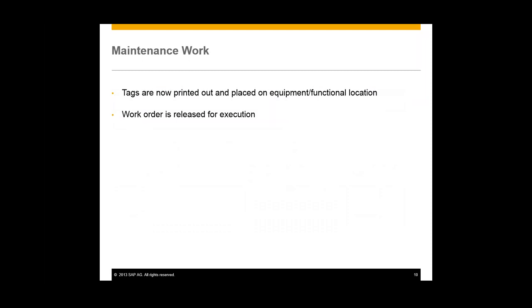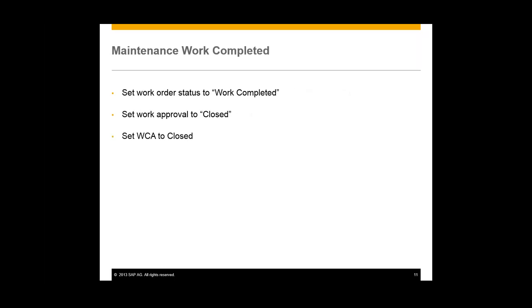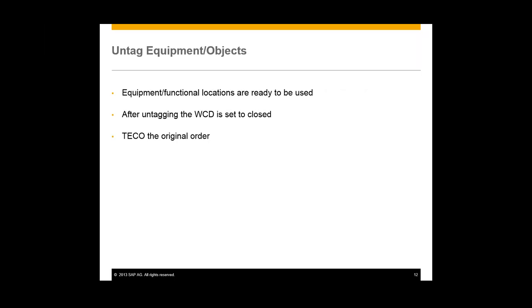Those tags are placed on the equipment or functional location. We will then go back to the work order and release it for execution, and the maintenance work will be carried out on those pieces of equipment or functional locations. Once the work is completed, we will go back into our work order and set that status to work completed. We will then go to our work approval and close it out, and we will also close our work clearance application. Now that our equipment and functional locations are ready to be used, we will close our work clearance document and untag those pieces of equipment. Finally, we will technically complete that original order.